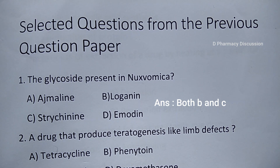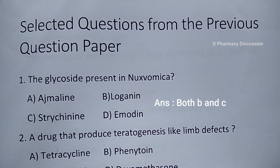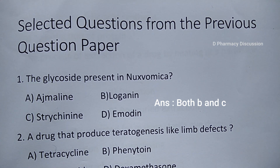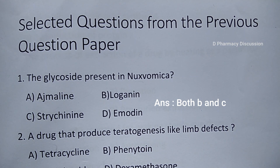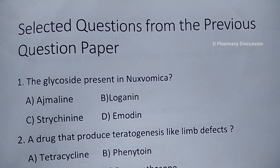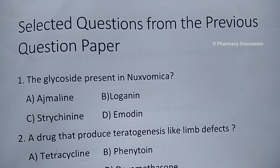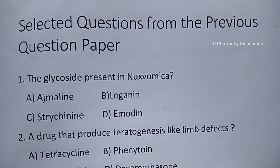Ajmalin and Ajmalicin are the indole alkaloids present in Rauwolfia. Loganin and Strychnin are present in Strychnos nux-vomica. Emodin is present in Aloe.